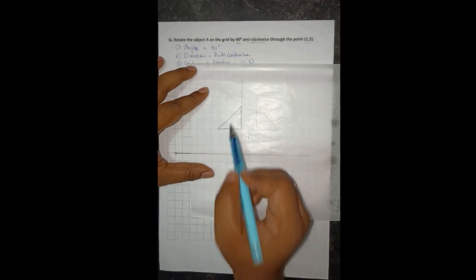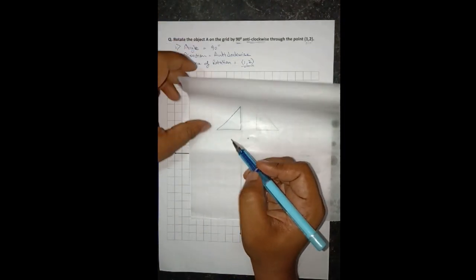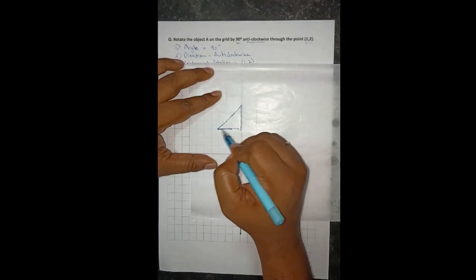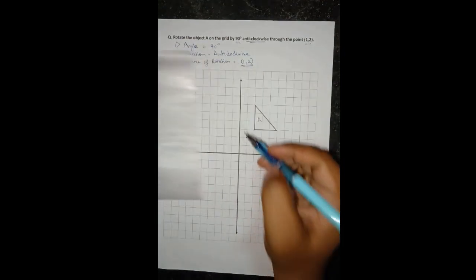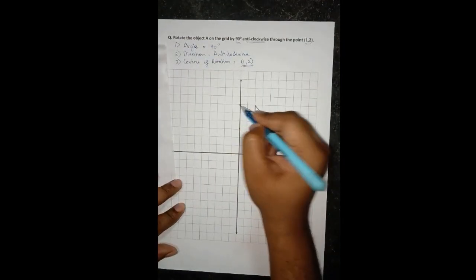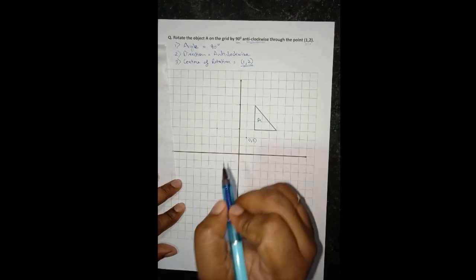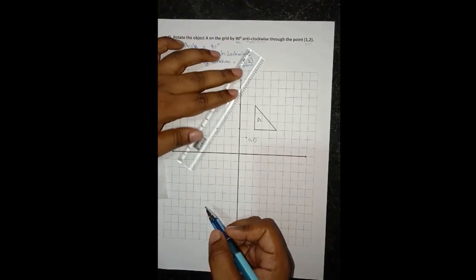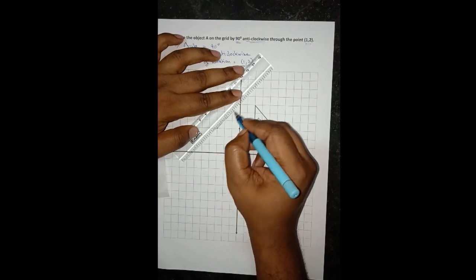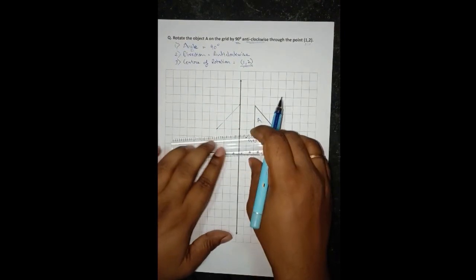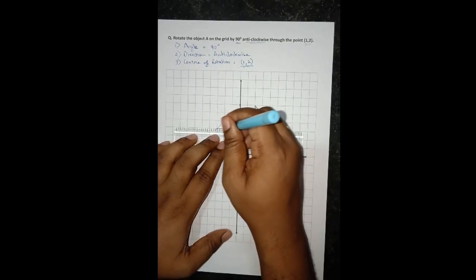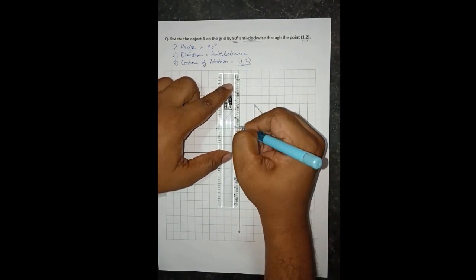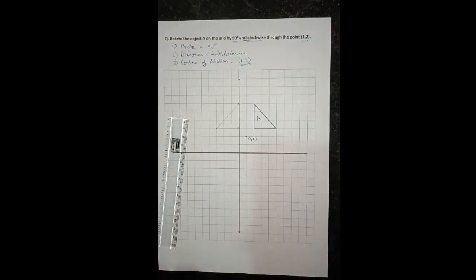Now I'll copy this. The required point is this, this and this. We have to join this, let me join the points.